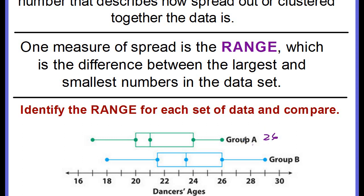The highest number for group A is 26 because this is the maximum value, and the minimum value is 17. So to find the range we subtract the two and the range is nine years for group A, there's a range of a nine year age difference.